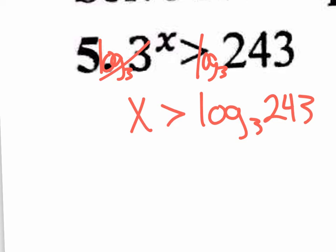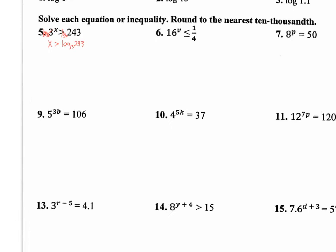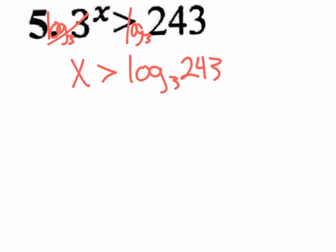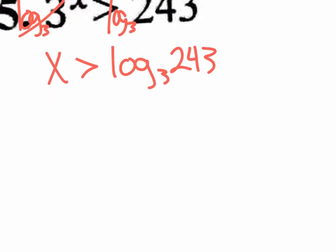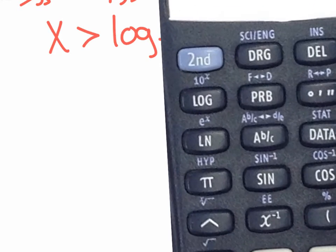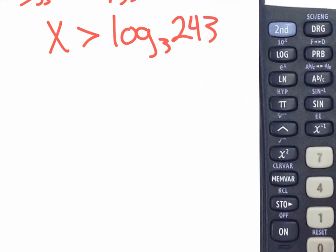However, you can't just leave it like that. You want a decimal value. The instructions say to round your answer to the nearest ten-thousandths, so that's four decimal places. If you have the Texas Instrument calculator, it only does common logs or natural logs — log base 10 or log base E. So if that's the case, you're going to have to apply the change of base formula.